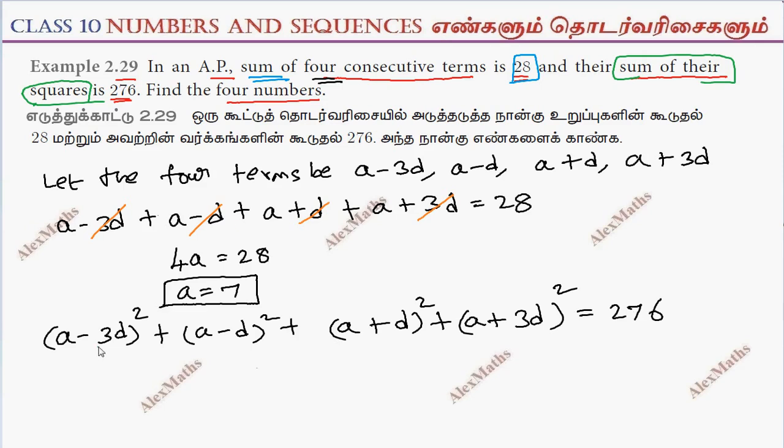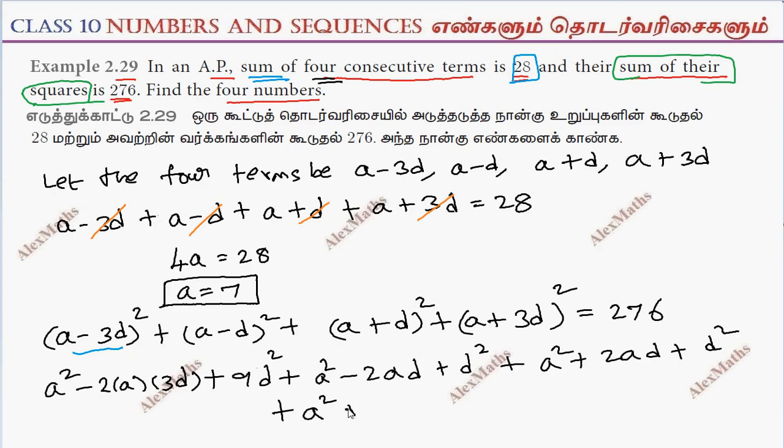Now we expand: a minus b whole square expansion is a square minus 2ab plus b square. So this is a square minus 6ad plus 9d square. The second term is a square minus 2ad plus d square. The third term is a square plus 2ad plus d square. The last term is a square plus 6ad plus 9d square.